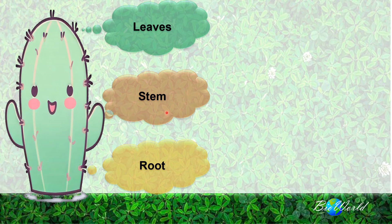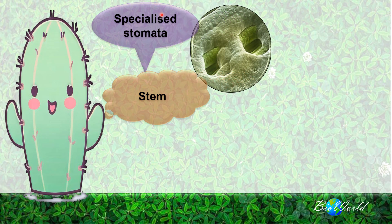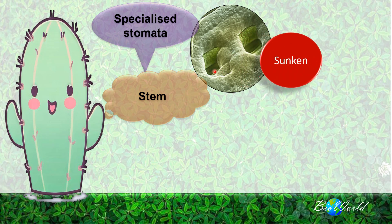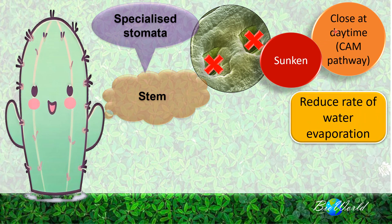Next, let's look at the adaptation of the stem. The whole body of the xerophyte is actually stem, and on the stem surface there are specialized stomata. As you can see in this picture, the stomata are hidden inside the stem — we call these sunken stomata. Added to that, the guard cells that make up the stomata carry out the Crassulacean Acid Metabolism (CAM) pathway. As you know from the topic of photosynthesis in our STPM Semester 1 syllabus, when a plant carries out the CAM pathway, the stomata close during the daytime. So the advantage of being both sunken and closed in the daytime is that the rate of water evaporation by transpiration is reduced.